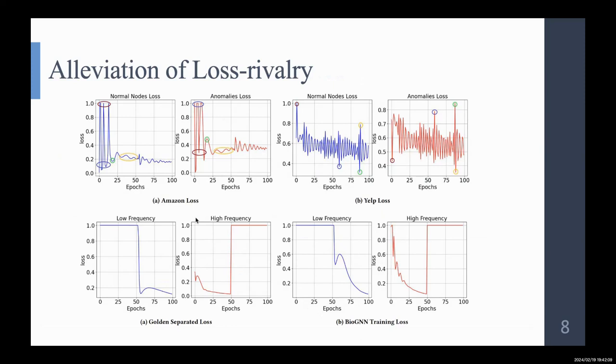And the left bottom is the golden separated loss, which means that we know the labels of all nodes. And we have accurate NLDs for all of the nodes. And we can see if we separate two sets, the loss is very smooth.